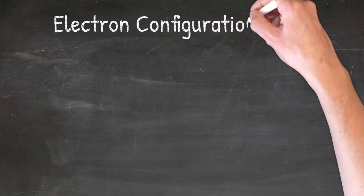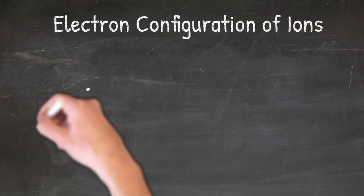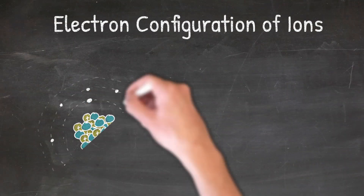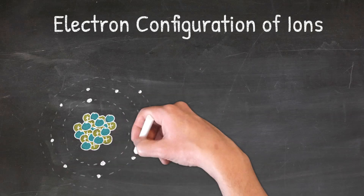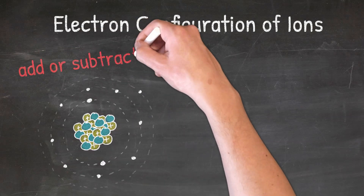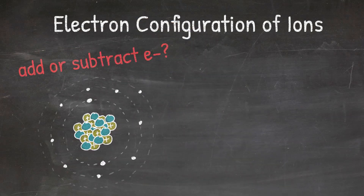When writing electron configurations for ions, the main thing you have to figure out is whether to add or subtract electrons, and this has to do with the charge. In our cations and anions video we covered positive and negative charges and how changing the number of electrons will change the charge. If you need a refresher on this info, please check out our video.